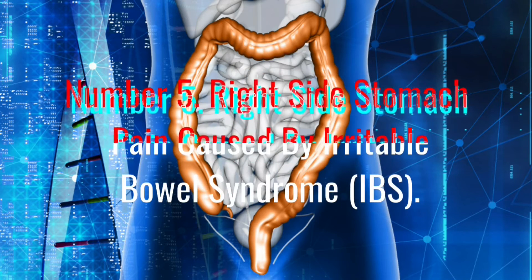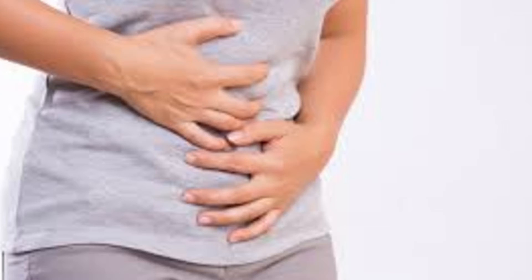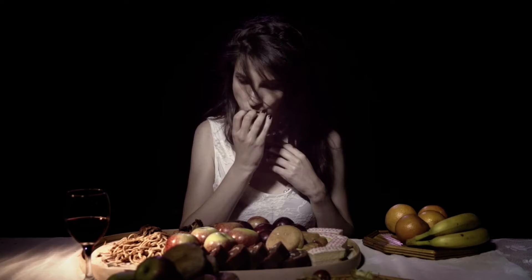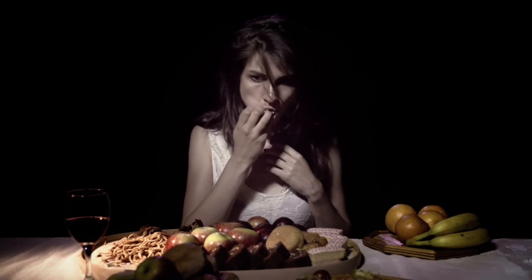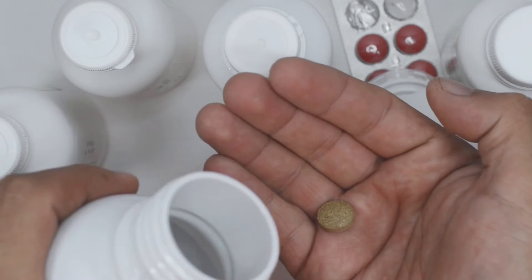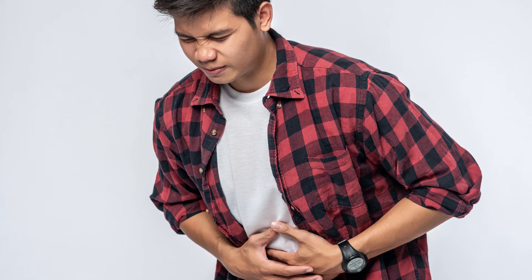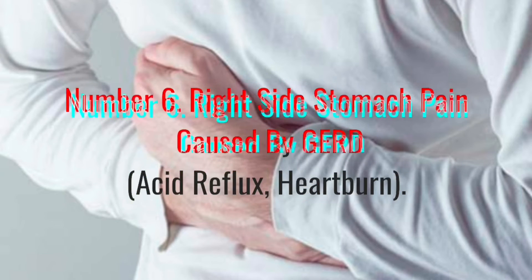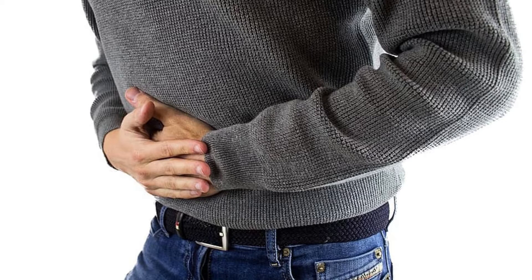Number five: right side stomach pain caused by irritable bowel syndrome. Irritable bowel syndrome, known as IBS, is a common condition that affects the digestive system. The exact cause of IBS is unknown and may be due to multiple factors. There is no known cure for this condition, but there are many treatment options to reduce or eliminate symptoms. Treatment includes dietary modifications, lifestyle changes, and prescription medications. It causes symptoms like right side stomach pain, stomach cramps, bloating, diarrhea, and constipation.